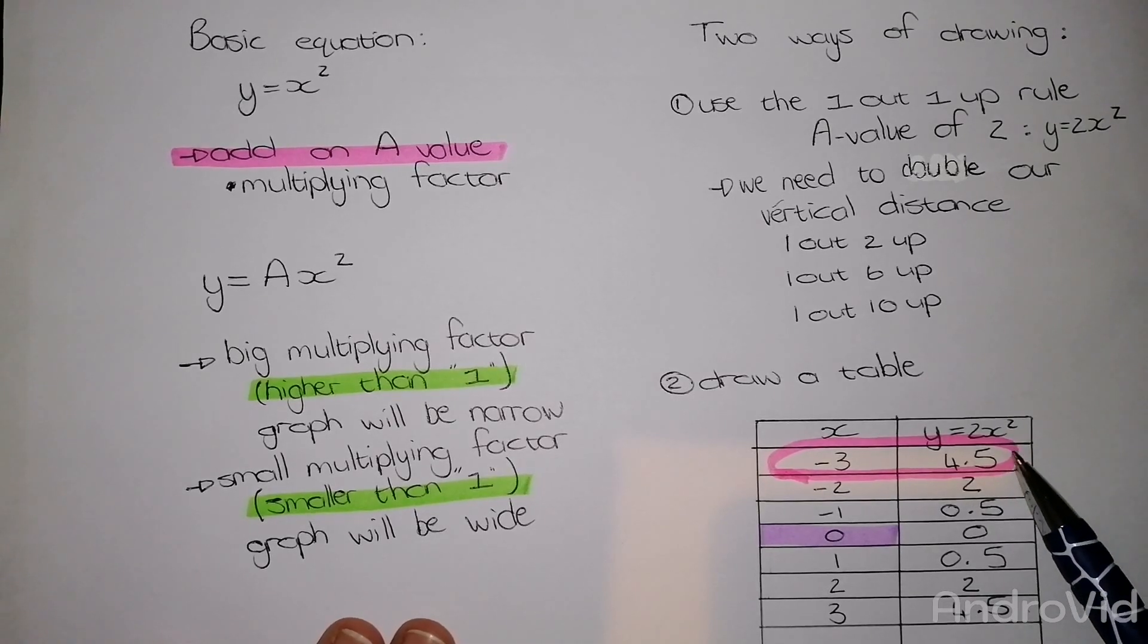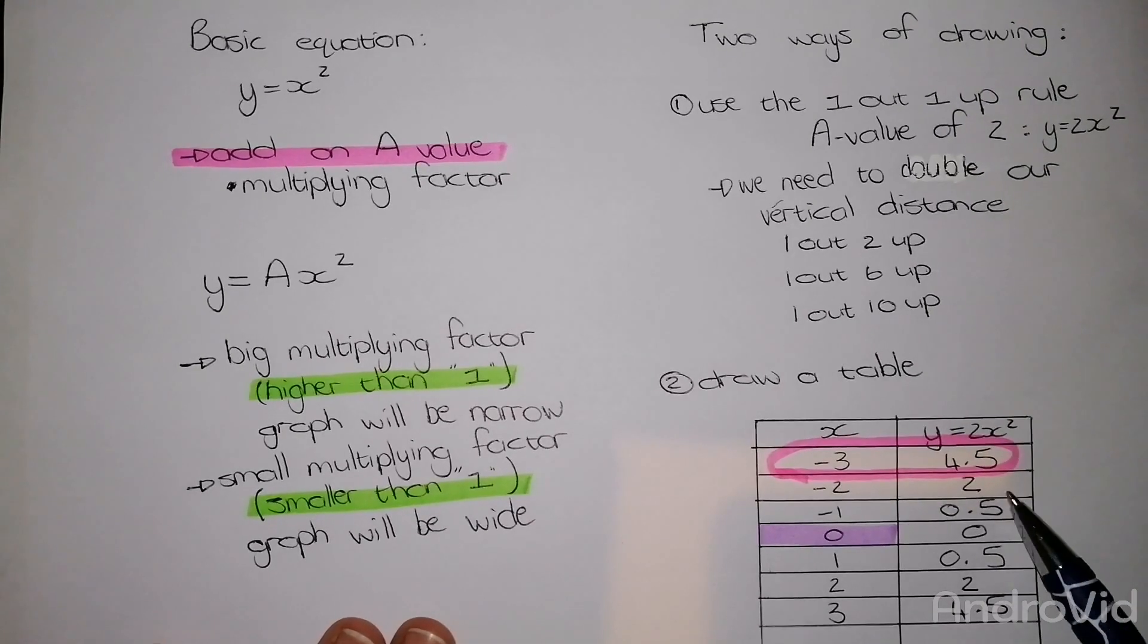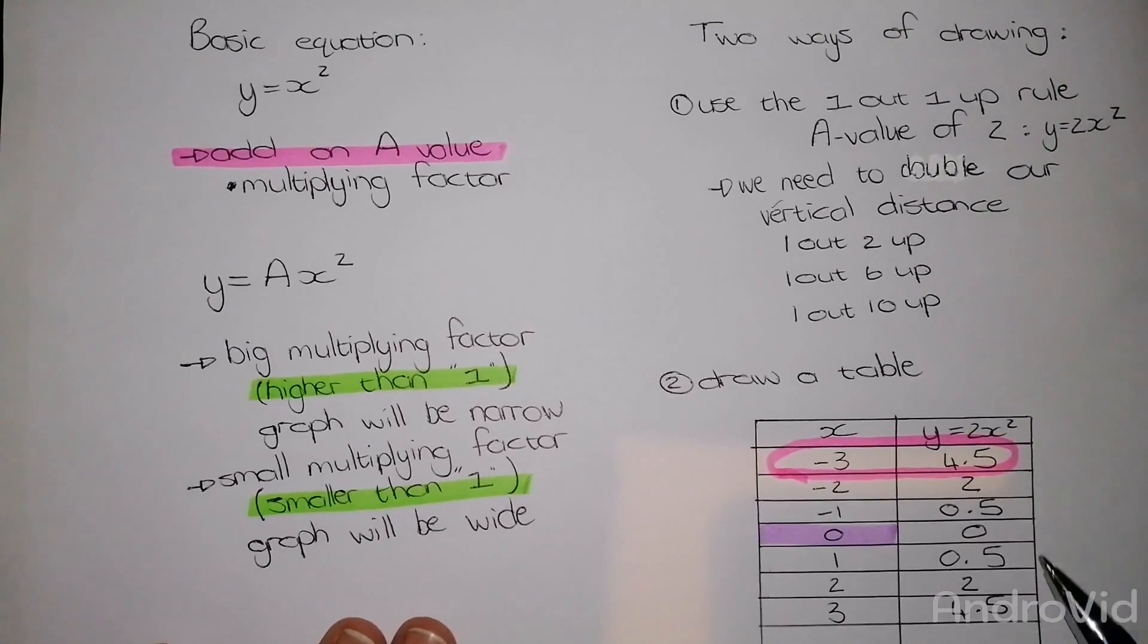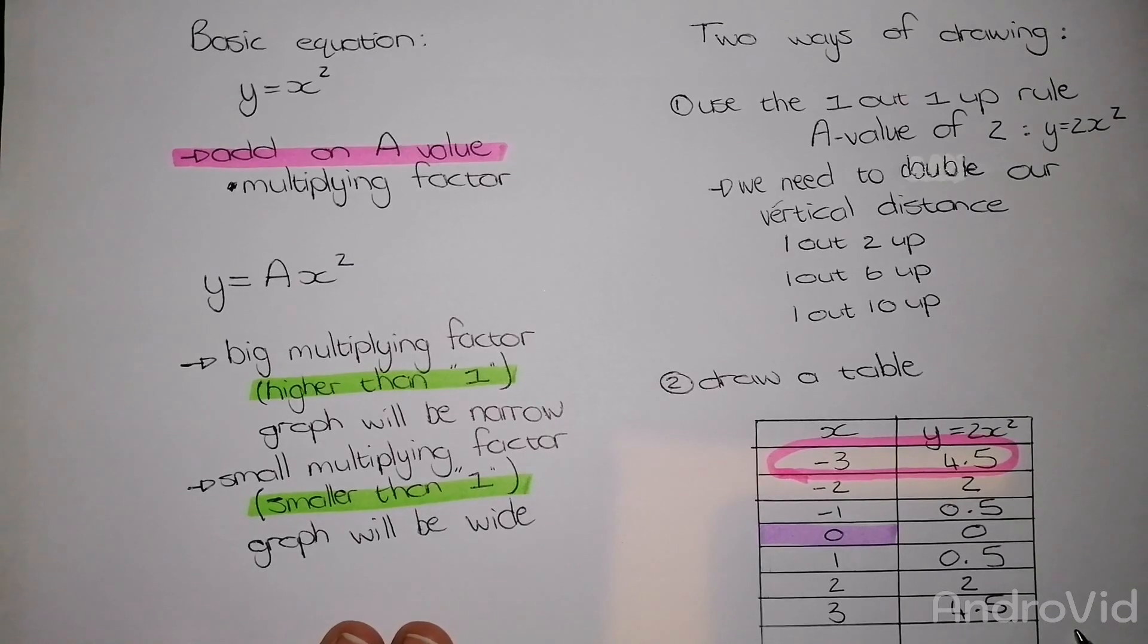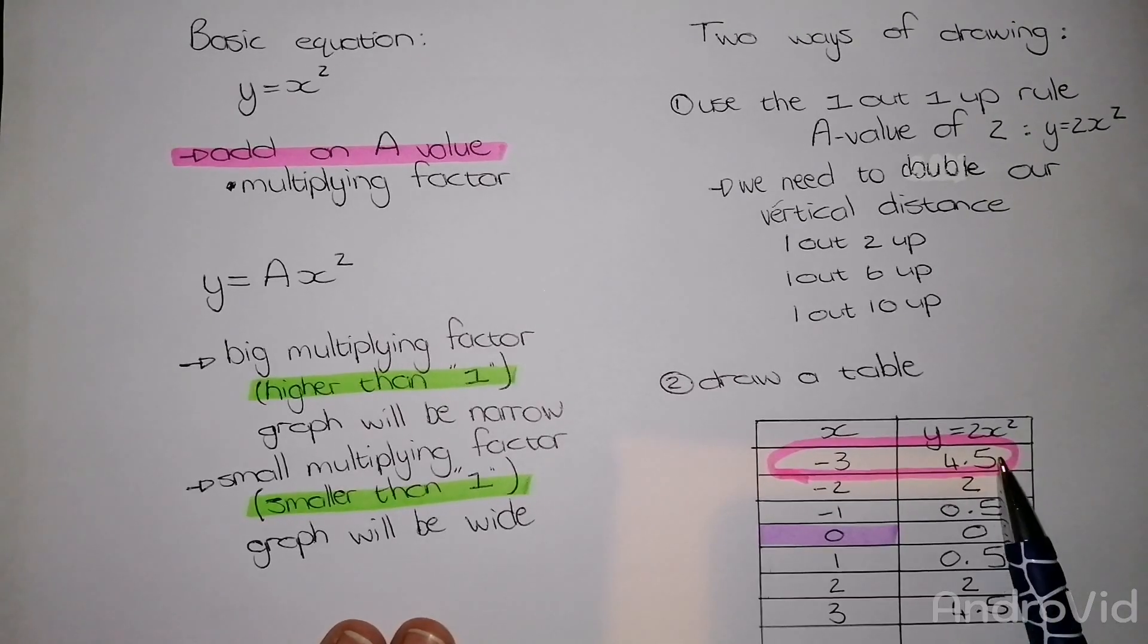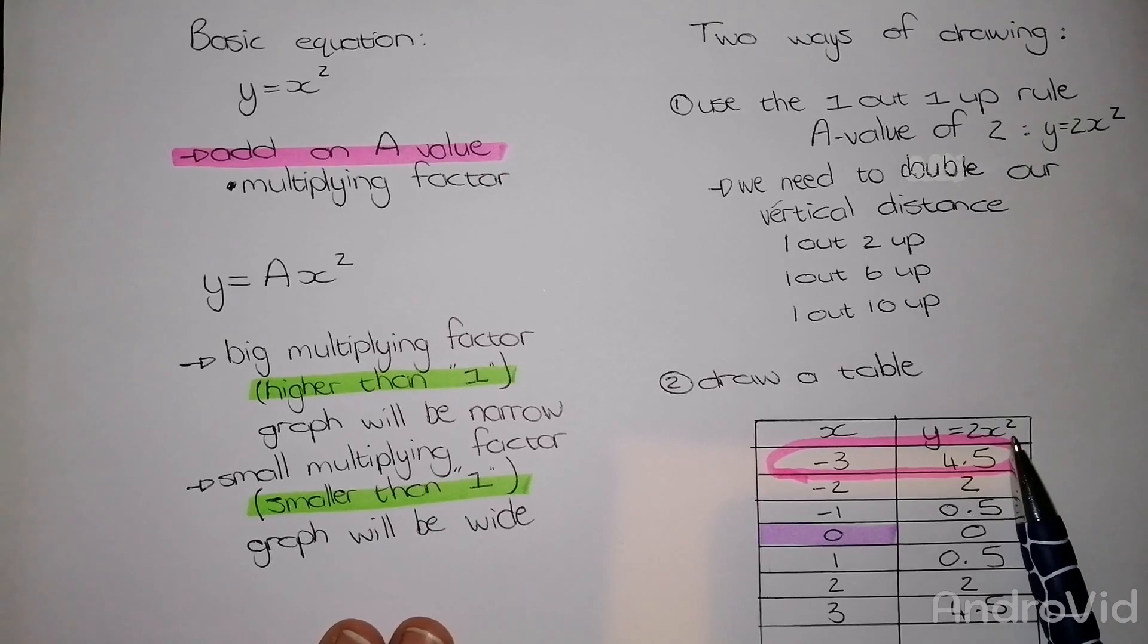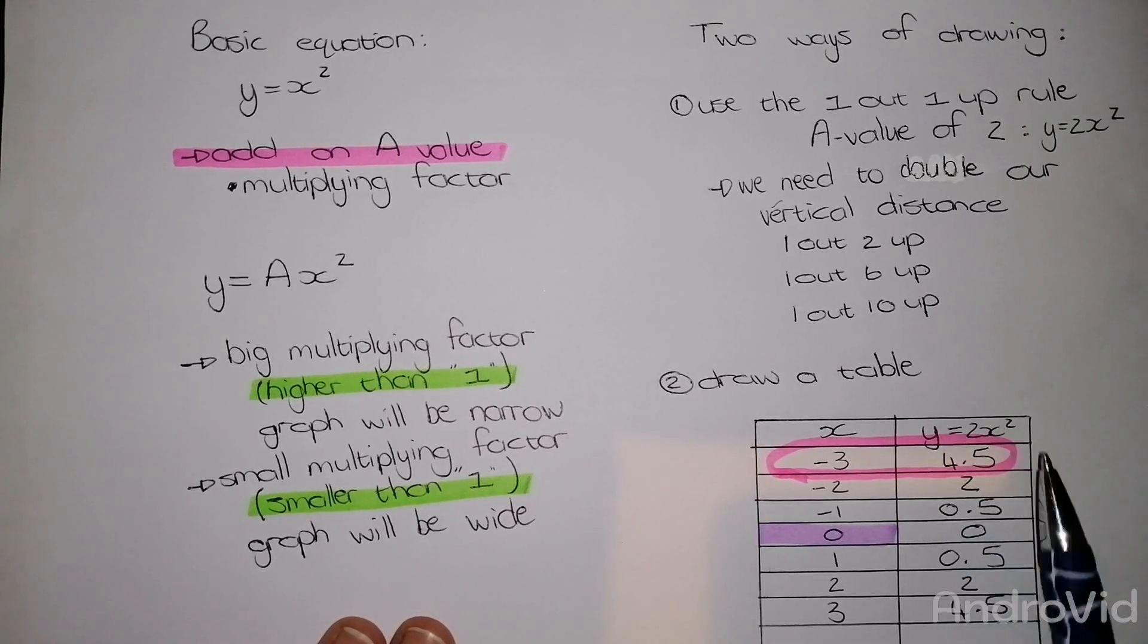As we can see, our y values is exactly the same going from the 0 upwards and from the 0 downwards. The reason for this is when we look at the features of parabolas, we know that parabolas are mirror images of each other. Therefore, I need to plot these dots on an axis set, connect the dots and then I have a narrower parabola.